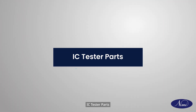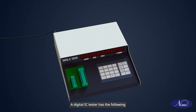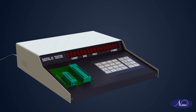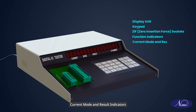IC Tester Parts. A digital IC tester has the following hardware parts: display unit, keypad, ZIF sockets, function indicators, current mode and result indicators, and power supply and status.